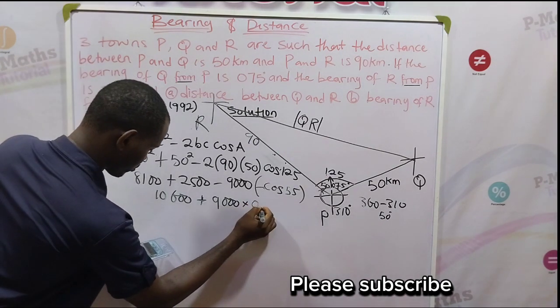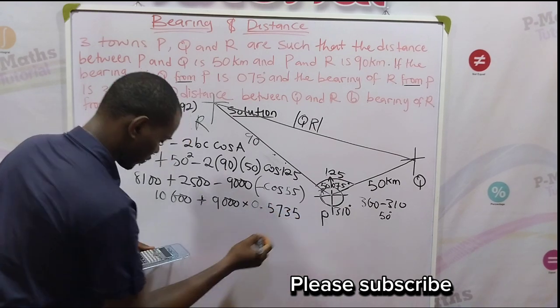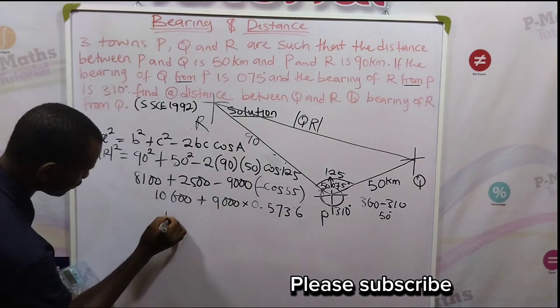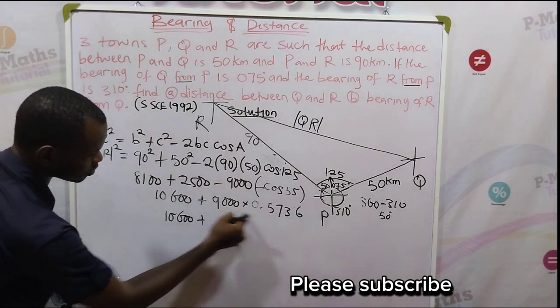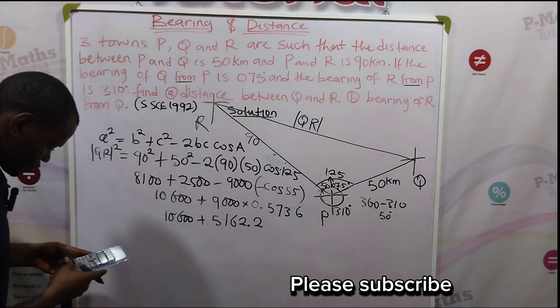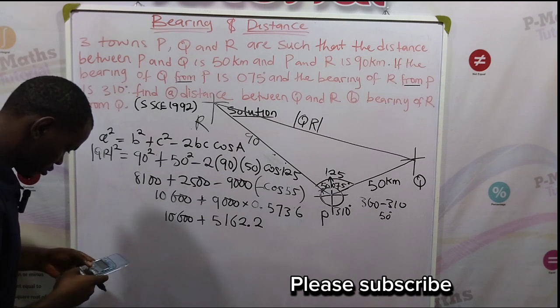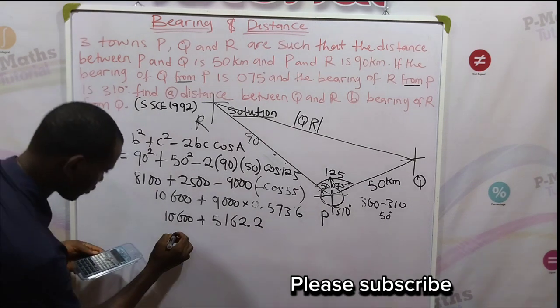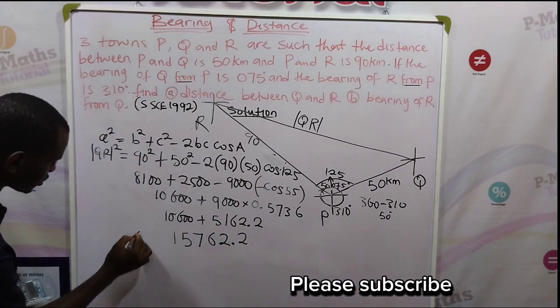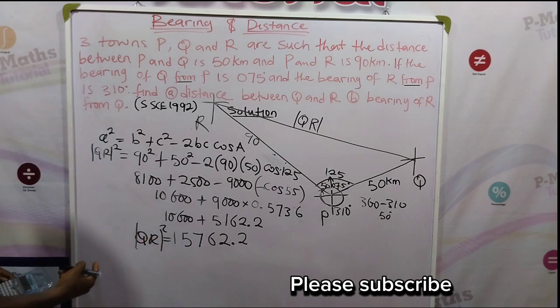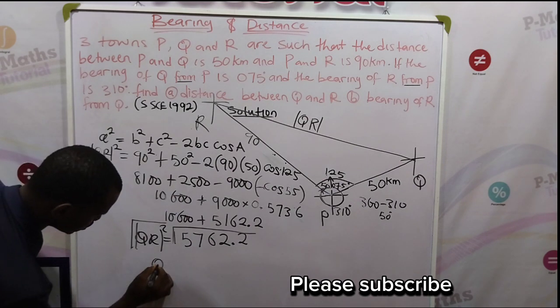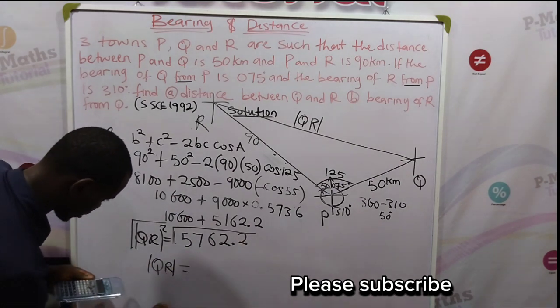That will give us 0.573536. Then we multiply it against this value, so we have 10600 plus 5162.2. That will give us 15762.2. That is QR squared. Remember that is the length QR we are looking for. So take the square root of both sides in order to eliminate this square. That is giving us that our length QR is 125.5 kilometers. So we have gotten the length of this line as 125.5.